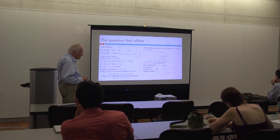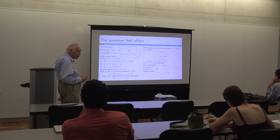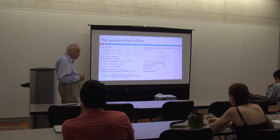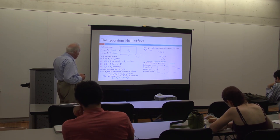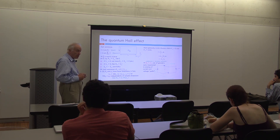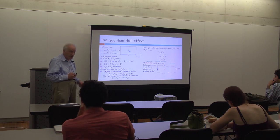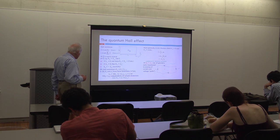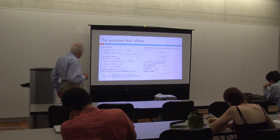We're going to be talking in this lecture, and indeed in most of this course, about systems which can be regarded as two-dimensional. So any degree of freedom normal to the plane of the screen is supposed to be frozen out by going to sufficiently low temperatures. And that really does seem to be the case in most of the experimental systems we're going to consider.